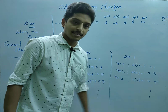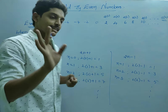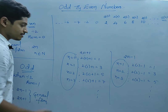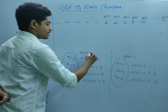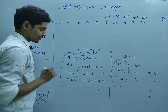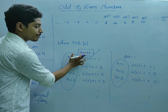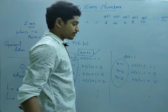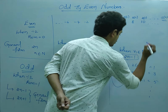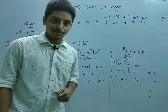When n=1 is taken as the start, both formulas satisfy the odd number series. The key difference: when n belongs to whole numbers (starting from 0), the general form of odd numbers is 2n plus 1. When n belongs to natural numbers (starting from 1), the general format is 2n minus 1. So odd numbers have two forms: 2n+1 and 2n−1.